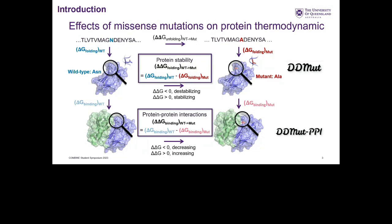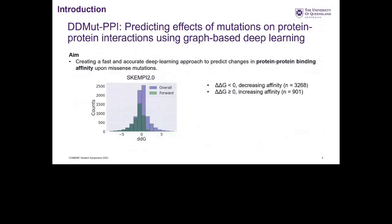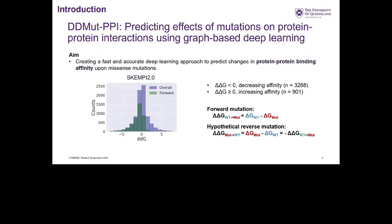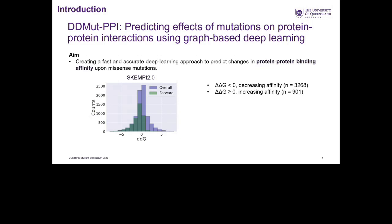In this work I developed DDMut-PPI, where I aimed to create a fast and accurate deep learning approach to predict the changes in protein-protein binding affinity upon missense mutations. In the original dataset from SKEMPI 2.0, there were many more mutations with delta delta G values less than zero, meaning they decrease binding affinity — the original dataset is colored in green here.